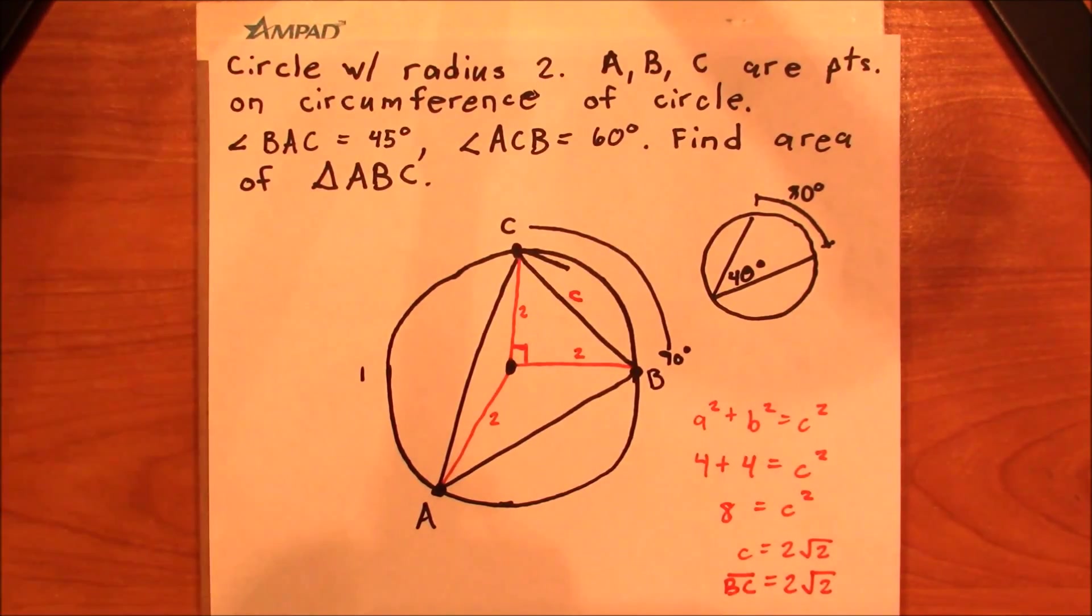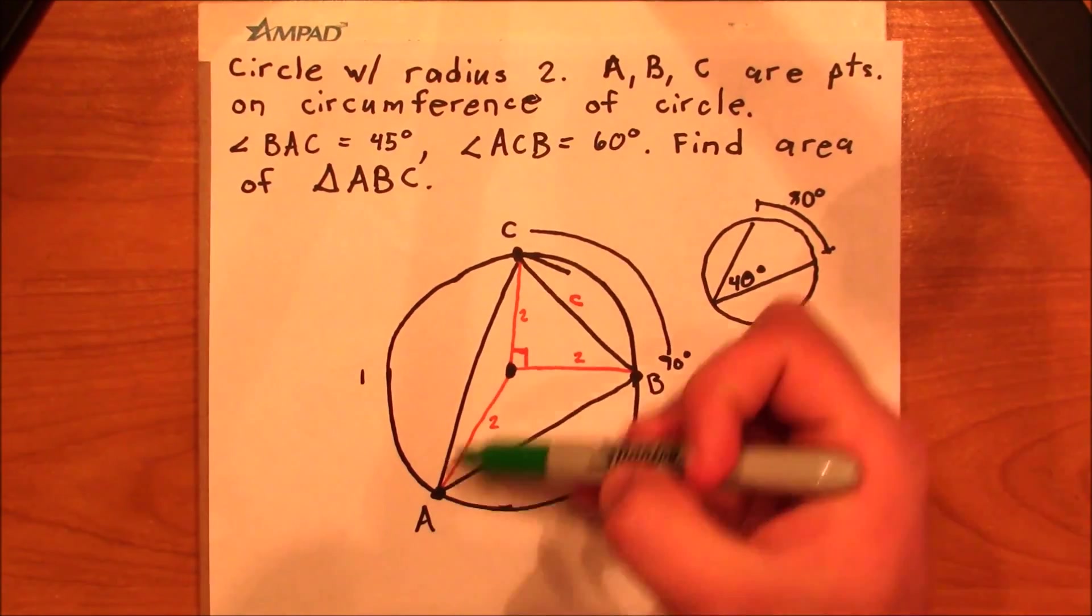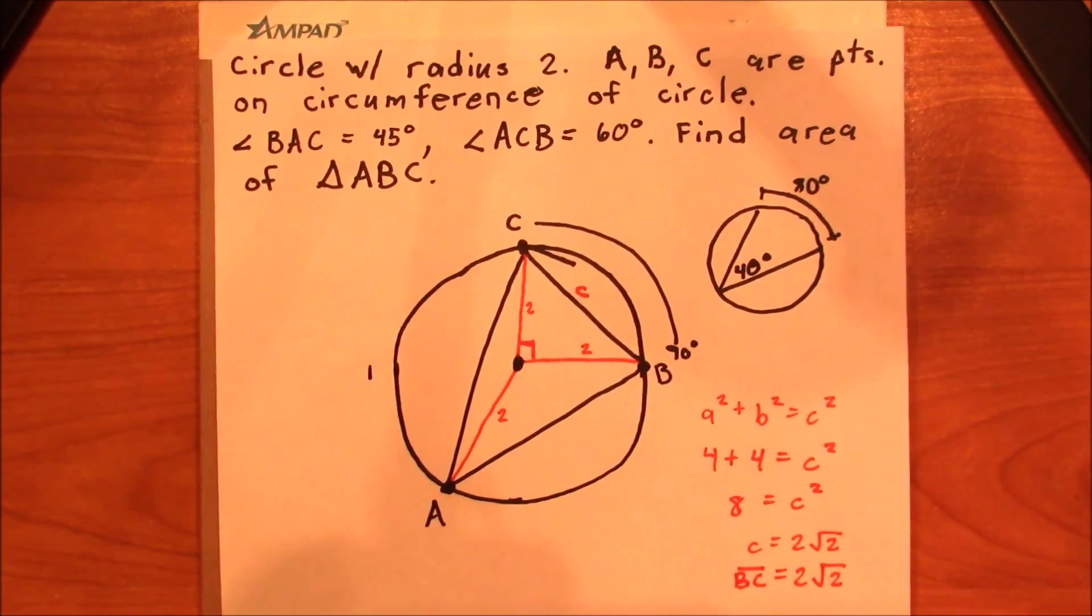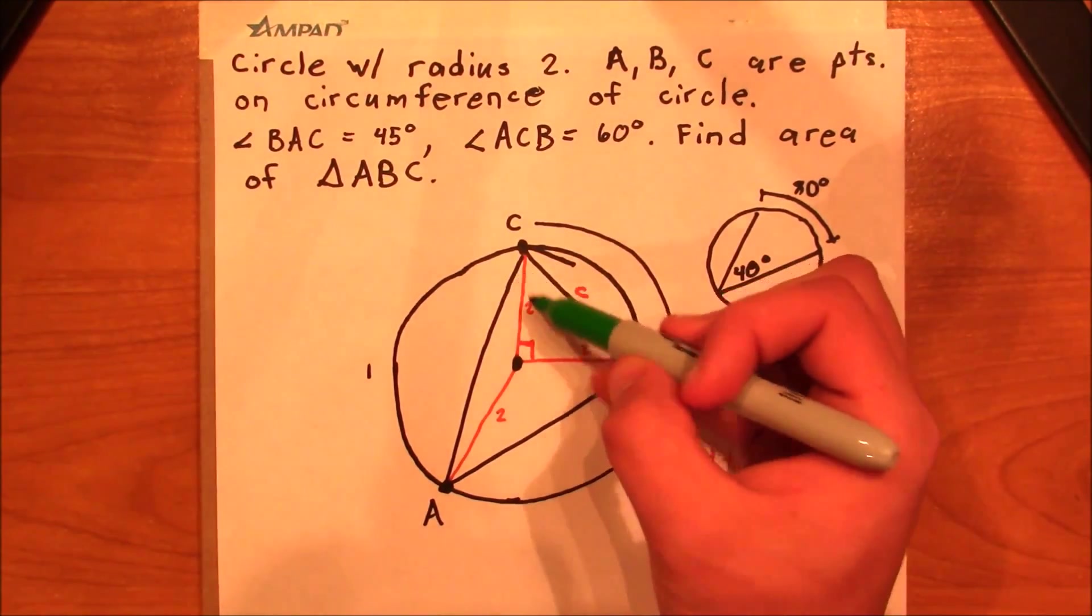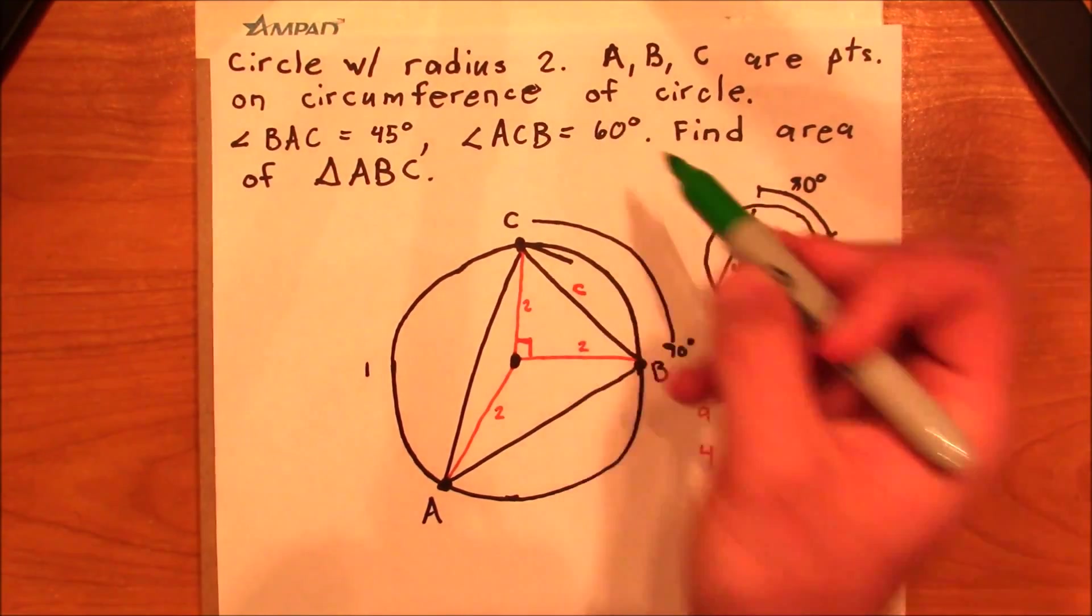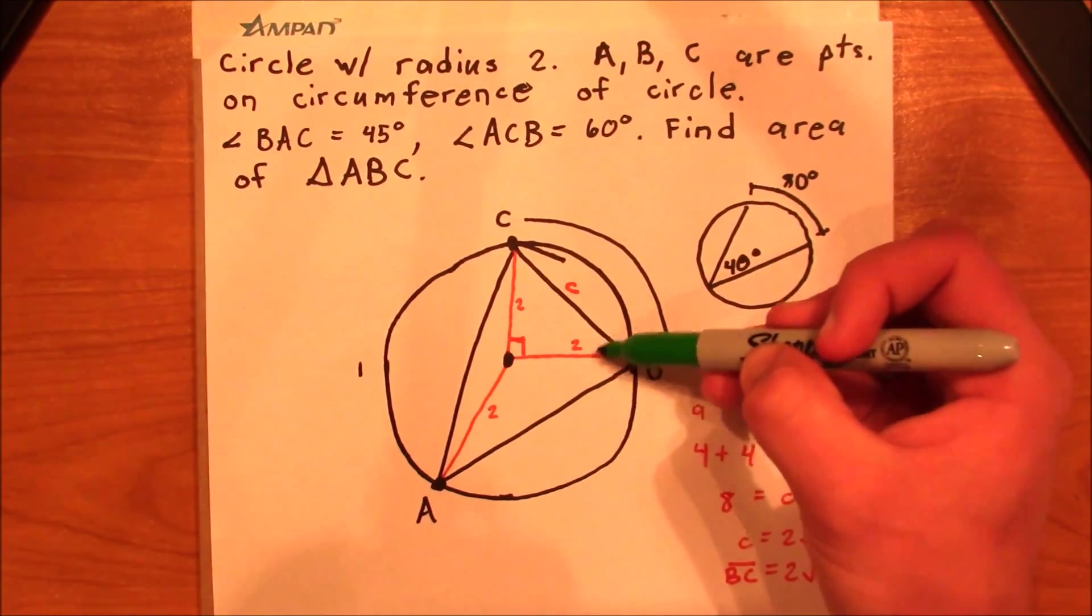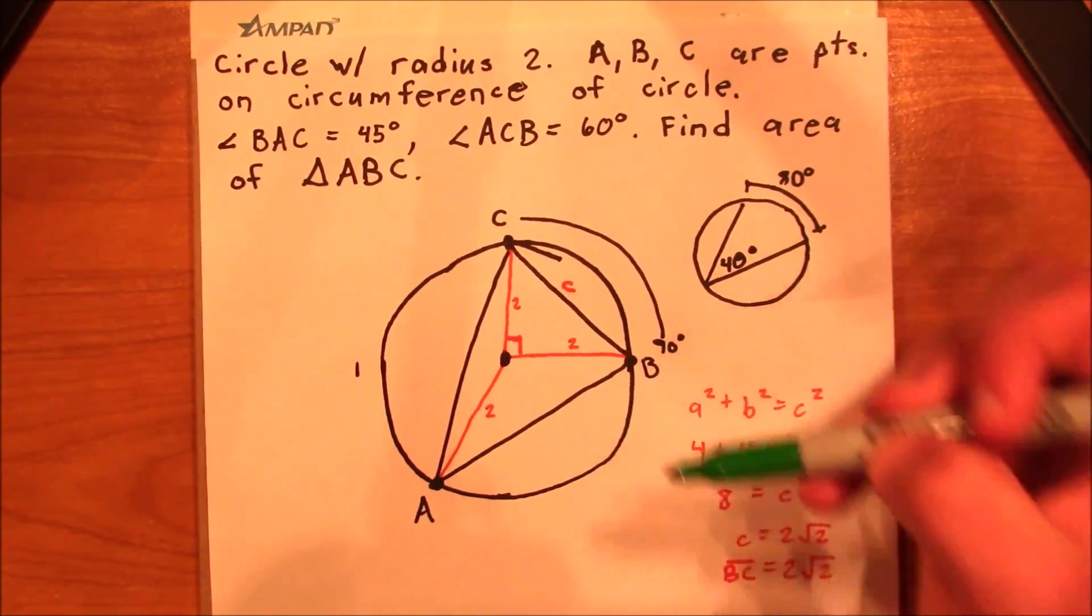Okay. Next, what we can do is we need to figure out another one of these lengths, either AC or AB. The easier of the two is going to be AB. The reason being is because this angle, ACB, is 60 degrees, and that's a lot nicer than the last angle here, which is this one, which is 75 degrees, I believe.